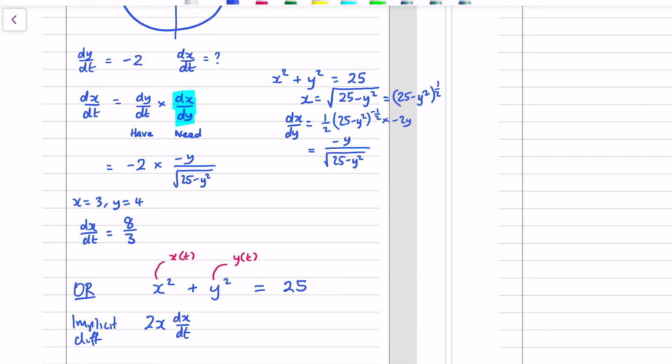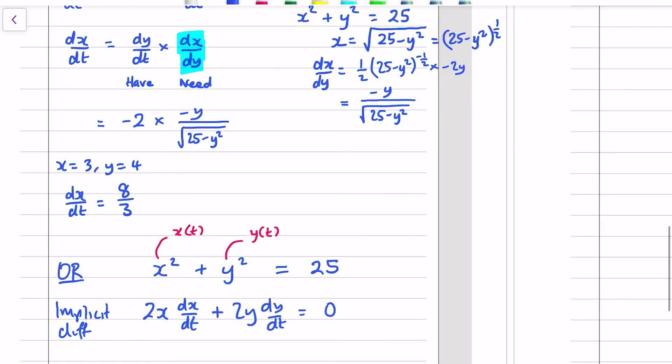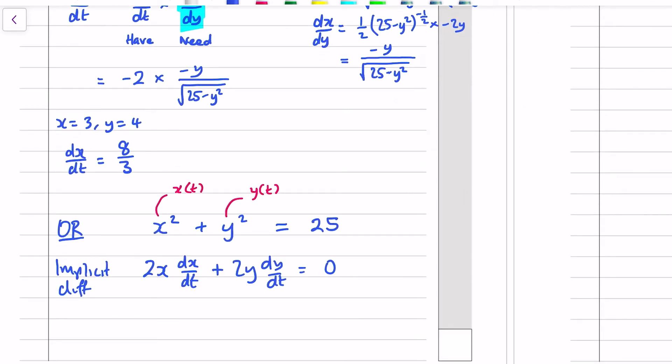Do the same thing for the y squared, 2y dy dt, and the 25 diffs to 0. So implicit differentiation allows us to diff all of the terms as they are without rearranging them, and then I sub in all the information. x was 3, dx dt was the thing we're trying to find, y was 4, and dy dt was negative 2, and I rearrange this equation, make dx dt the subject, so the 2 times 4 times negative 2 part is negative 16, goes on the other side is 16, and then I divide by the 2 times 3 in front of the dx dt. 16 over 6 is 8 over 3. Much quicker.